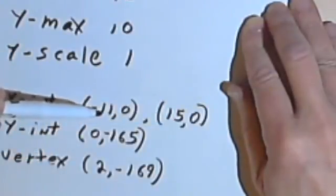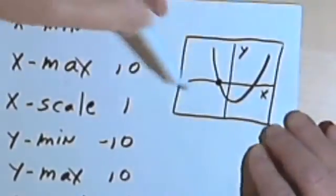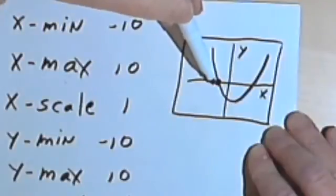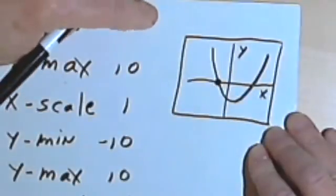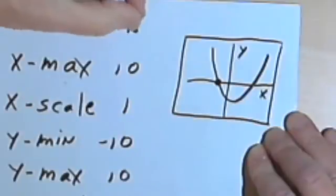So the lower one, the negative 11, has to be part of my graph, which means I want to have an x-value that's at least negative 11 on my graph. The calculator sets it to negative 10, so I'm going to change that to a little lower than negative 11, in fact. Let's make that maybe negative 13.